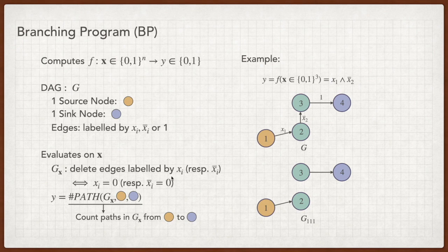The BP is evaluated in two steps. First, we delete those edges whose label equals 0 according to the input x. For example, if the input is 1, 1, 1, then x2 equals 1 and not x2 equals 0. So, we need to delete the edges labeled by not x2.